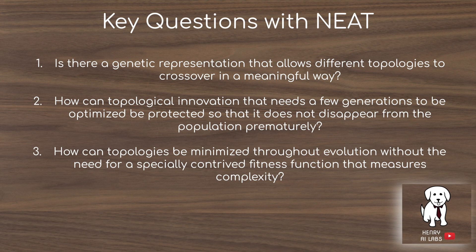The second question is: how can topological innovation that needs a few generations to be optimized be protected so that it doesn't disappear from the population prematurely? A bigger model requires more time to optimize, so if a population member is mutated to become more complex with random weights, that network probably won't perform as well initially. You need to protect these new structures and developing complexity so they aren't penalized too much right away. A speciation technique is needed to ensure neural networks have enough time to potentially benefit from added complexity.